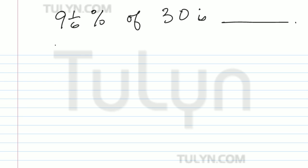Now, if we're given 9 and 1/6% of 30, go ahead and convert this into multiplication, bring down the numbers.